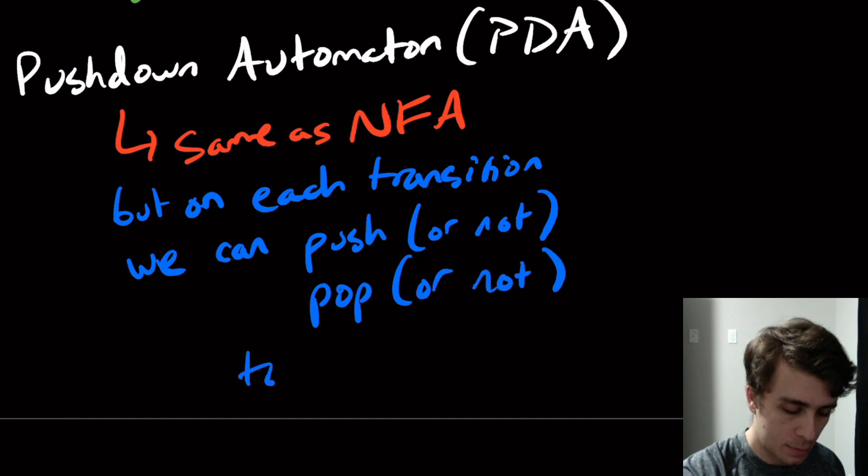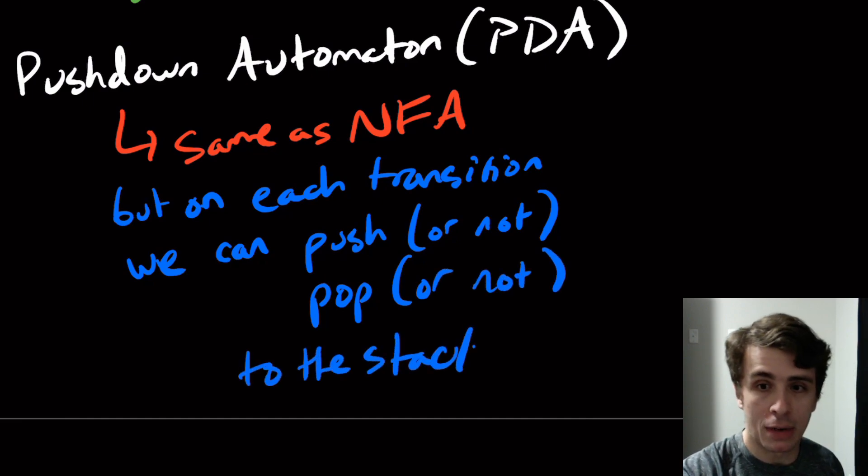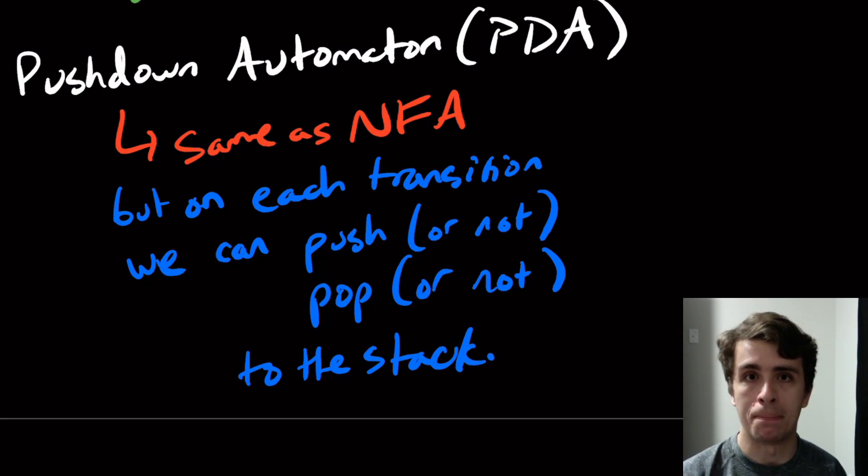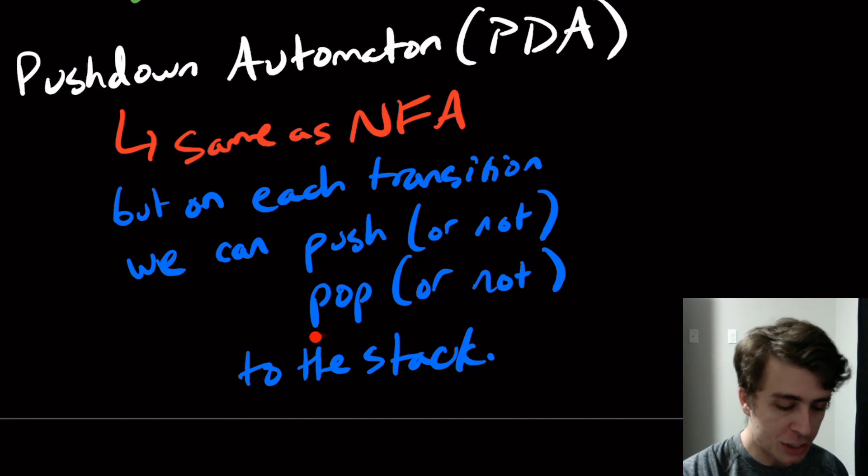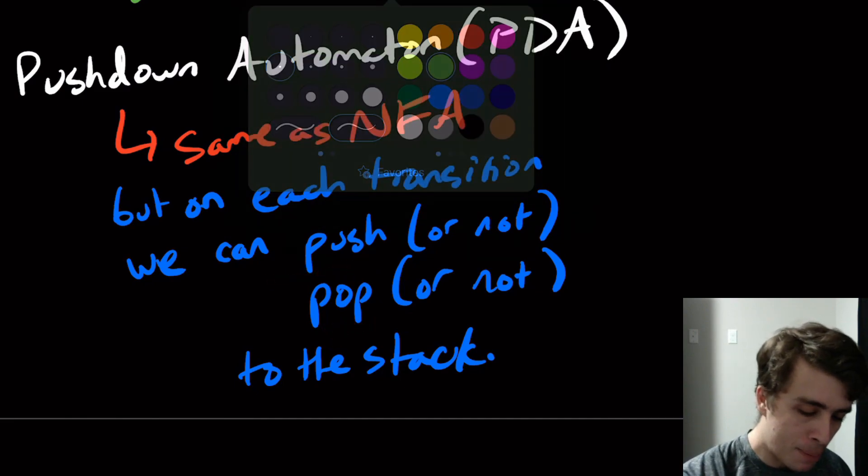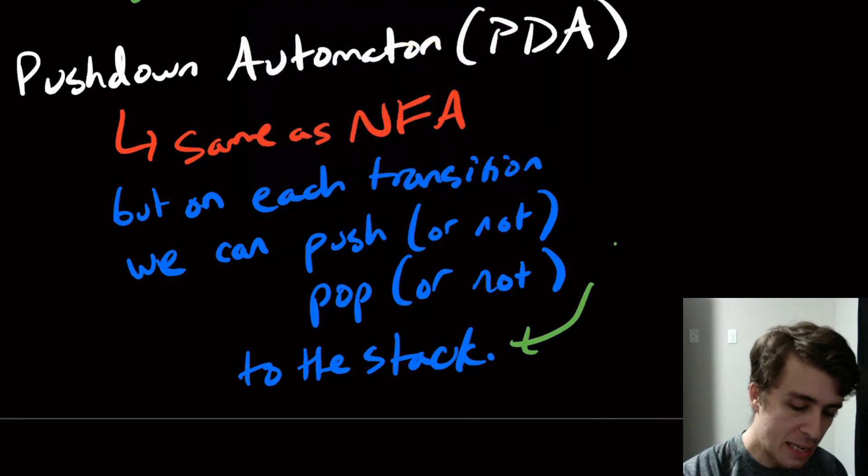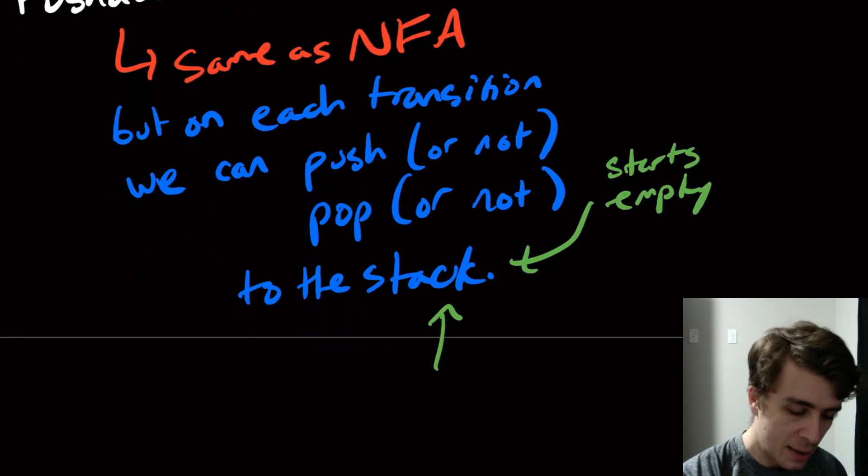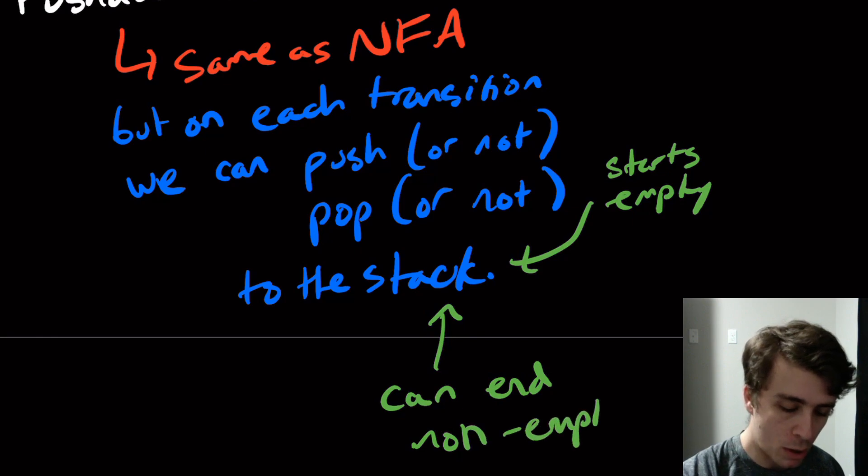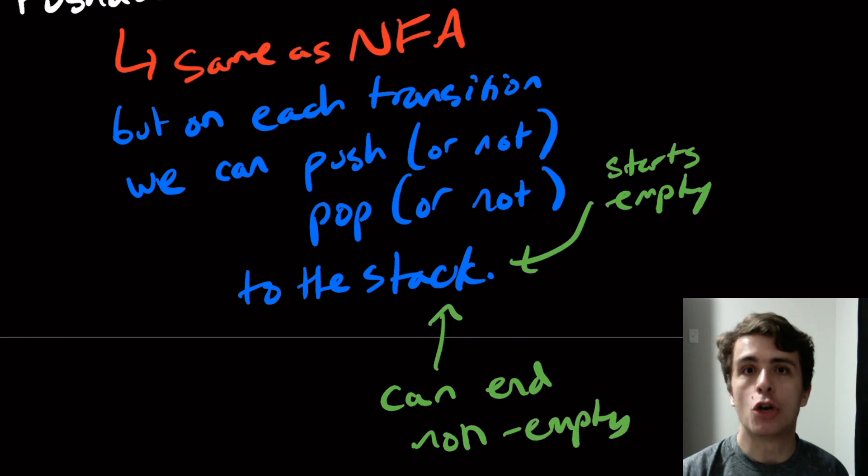We're only going to allow ourselves one stack and I want you to think about why. We're only going to restrict ourselves to one. If we have two it actually changes the model, but we're going to stick with one because it's simpler. We can push onto the stack or we can pop to the stack. Some properties of this stack are that it starts empty. And another one is that it can end non-empty. So when we're all done and we accept or whatever, we don't have to have an empty stack. We could if we want to and there is a way to enforce it, but we are not going to require ourselves to do so.